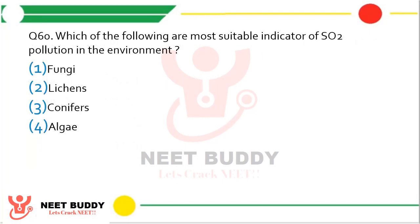Question 60. Which of the following are the most suitable indicators of SO2 pollution in the environment: fungus, lichens, conifers, or algae? The correct answer is option 2 — lichens.